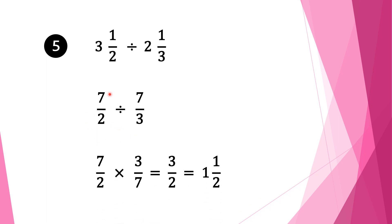Now we have a normal fraction division. We write down the first fraction 7 over 2, change the division sign into multiplication, and take the reciprocal of the second fraction. It is 7 over 3, so we write it down as 3 over 7. We check whether we can cancel anything — we can cancel 7 and 7. So 7 goes into 7 once. We multiply our numerators: 1 times 3 is 3, and our denominators: 2 times 1 is 2. Our solution is 3 over 2, but this is an improper fraction, so our final solution is 1 and a half.